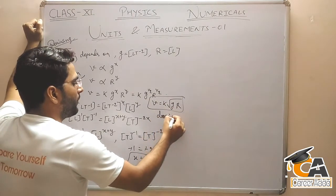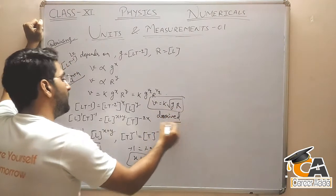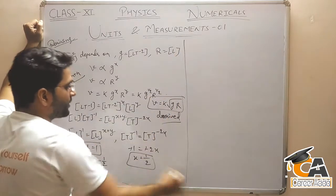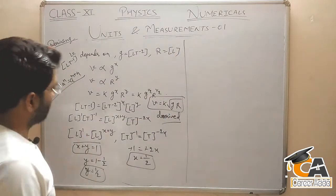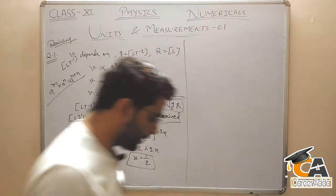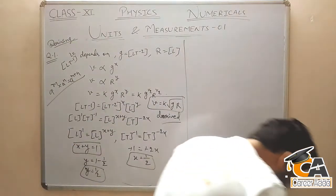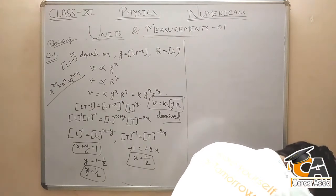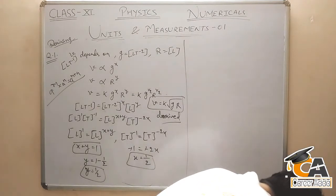1 by 2 को हम root लिखते हैं बच्चों, तो यहाँ पे relation मिल जाएगा: escape velocity is equal to k root over (g × r). यह आपका derived हो गया formula. Clear है बच्चों, बहुत easy question है, note कर लो।